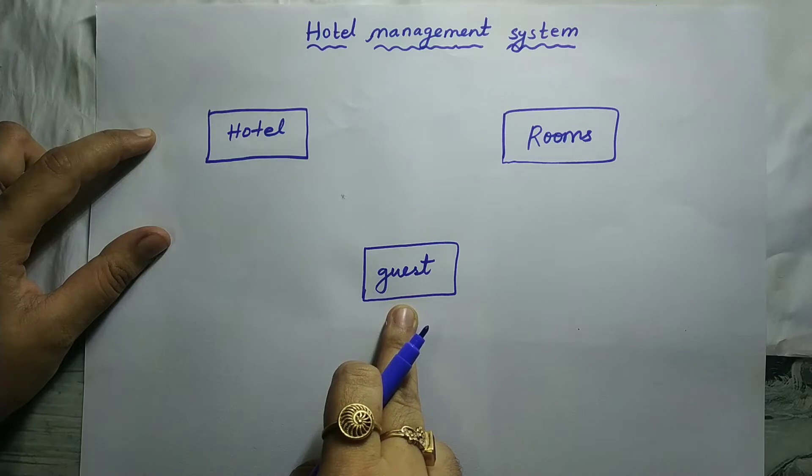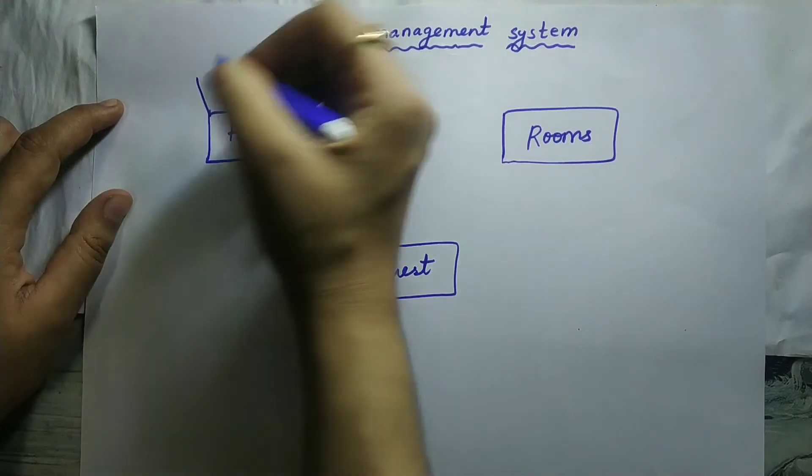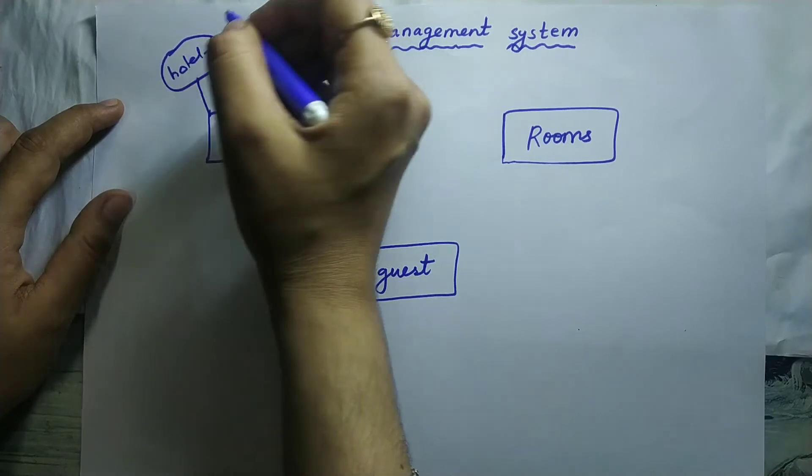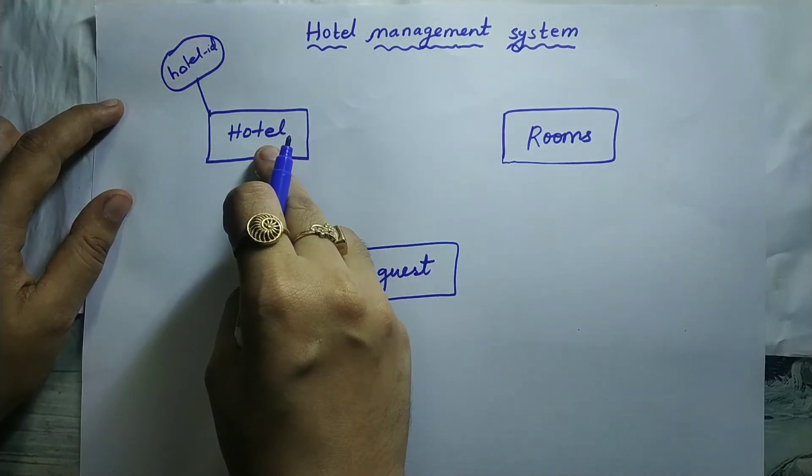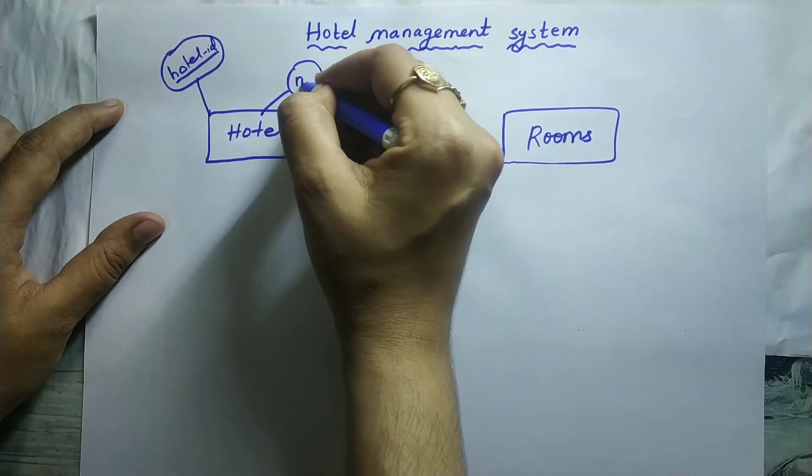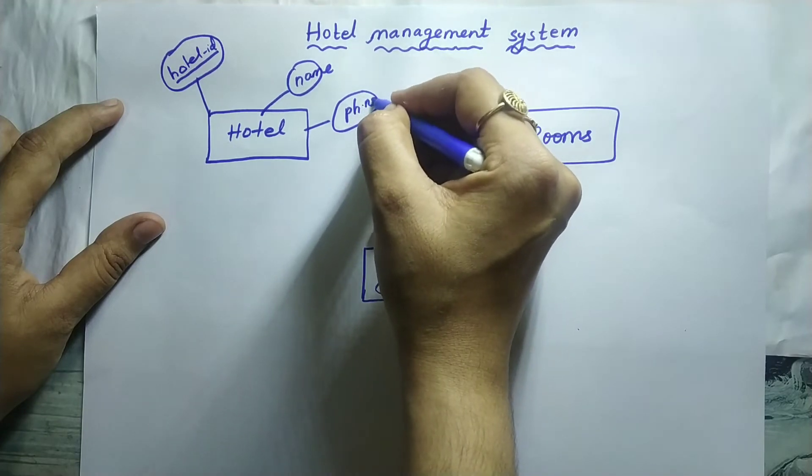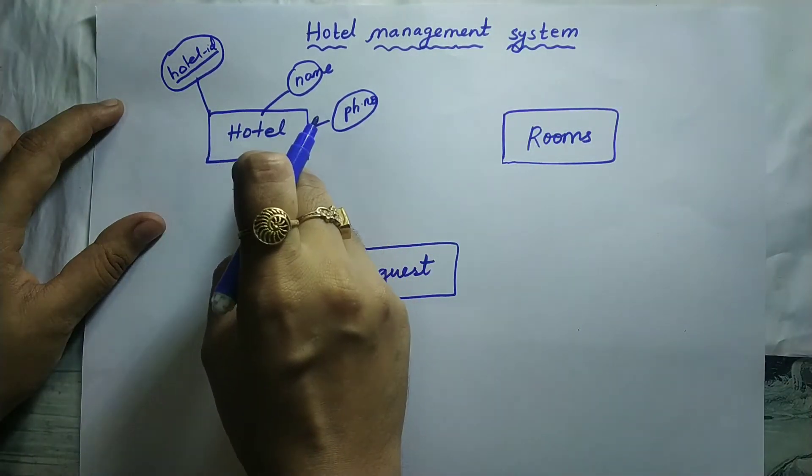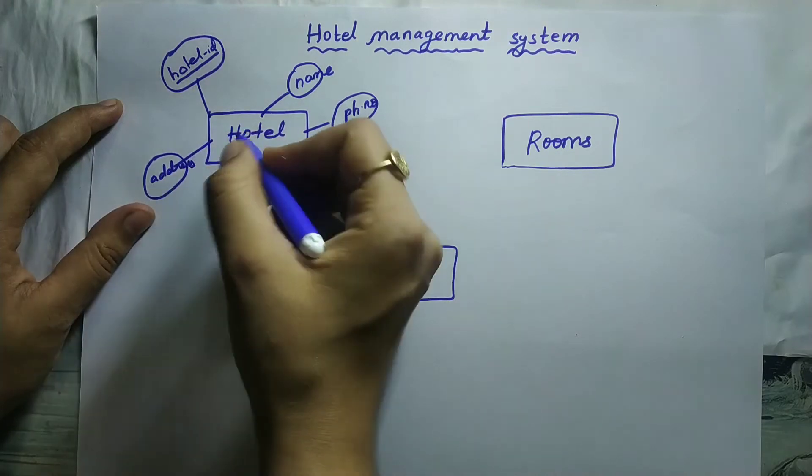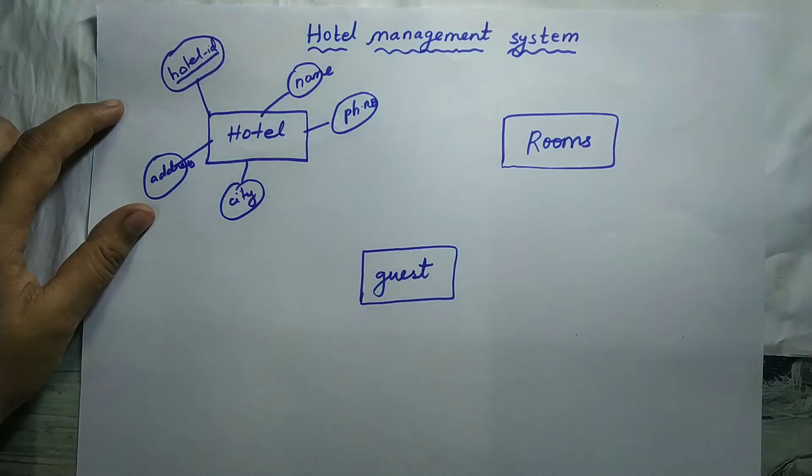Attribute must be written inside oval shape. So what are all the attributes of hotel? Hotel will have an ID. Hotel ID. ID will be unique for every hotel, therefore it is a primary key, so it must be underlined. Next name of the hotel, next phone number of that hotel so that the guest can contact, next the address of the hotel, next it is city of that hotel, so in which city the hotel is located.